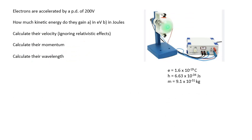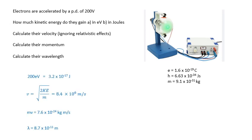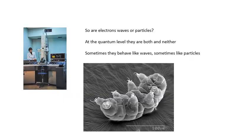You should pause the video and have a go at these questions. These are very typical A-level questions you might get. So, are electrons waves or particles? And the answer is: at the quantum level, they are something different. I think of an electron as being a particle that behaves like a wave.